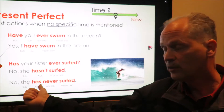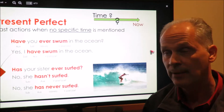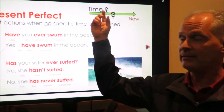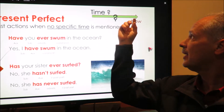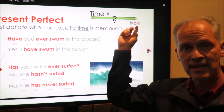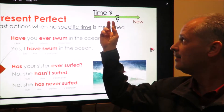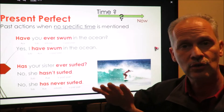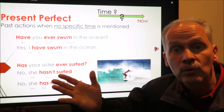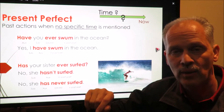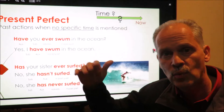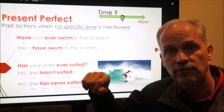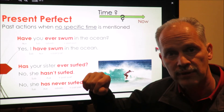Or: no, she has never surfed. This timeline expresses the idea that this is now, and in the past this action occurred, but we don't know exactly when. This is one idea or concept of the present perfect.